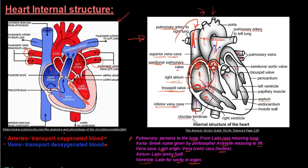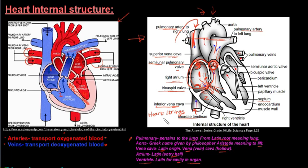Next are the chordae tendineae — also called heart strings. These are tendinous cords that attach to the valve flaps. They prevent the tricuspid valve segments from flapping back into the atrium, which would allow blood to flow back. Think of them like self-closing doors: they pull on the valve flap to ensure it stays shut and doesn't push back up, so blood cannot return to the previous chamber.